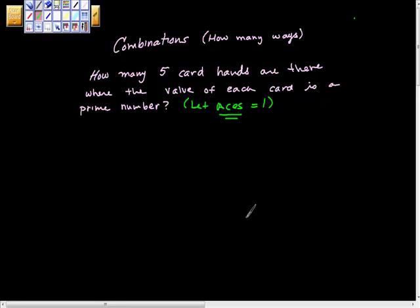We've been working on combinations, and what we're looking at now is not the probability of an event happening, but how many ways that could happen.